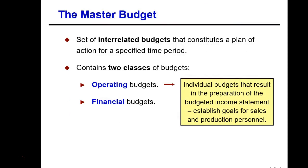The master budget is a set of interrelated budgets, meaning that information from one budget is needed to prepare the next budget. There are two classes of budgets: what we call operating budgets and financial budgets.